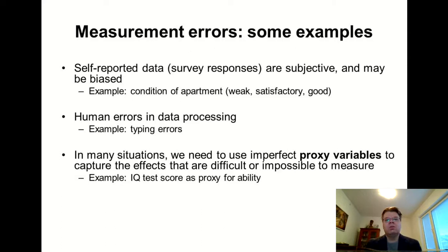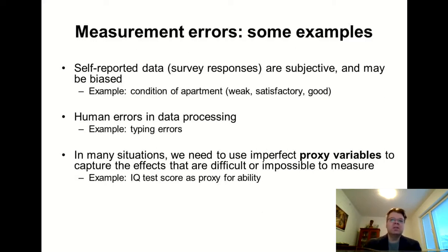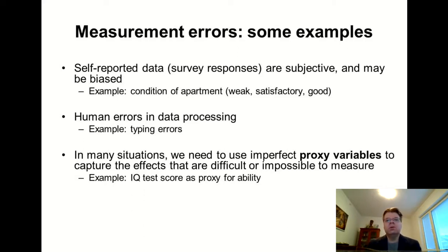Similarly with interest rates, it's not always clear what the risk-free interest rate in the market is. In practice, researchers often use some government bond rate, but government bonds are not entirely risk-free either. So there is no such thing as a perfect interest rate in the real world market — we need to use some kind of imperfect proxy. In micro applications, such as the earnings equation in labor economics, the inherent ability of a person would be a very important factor to explain earnings, but it is very difficult to measure what the ability of an individual actually is.